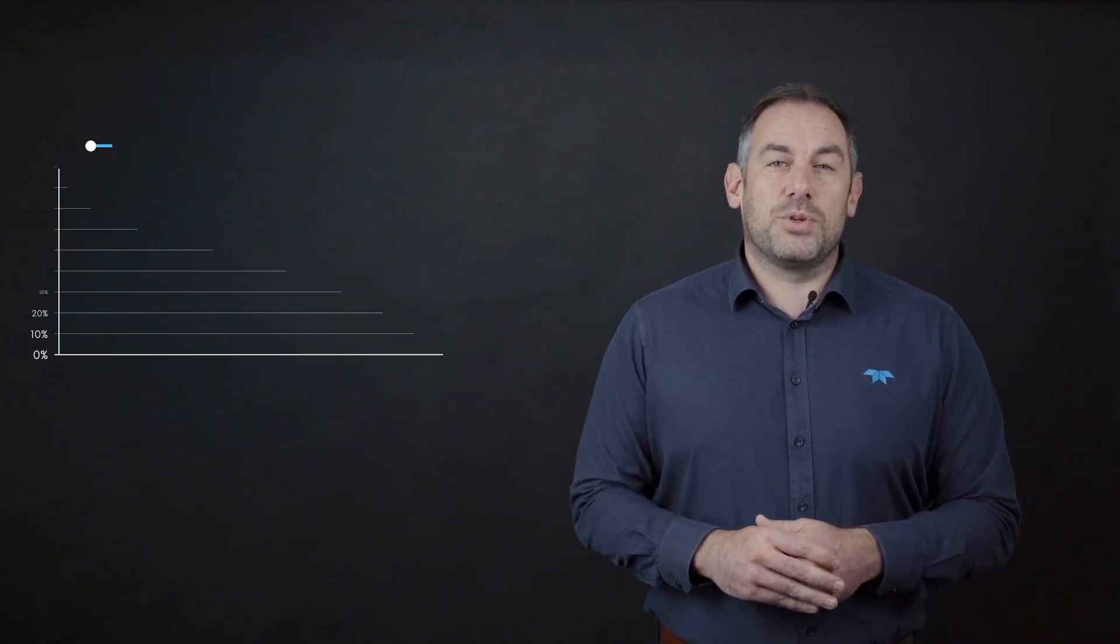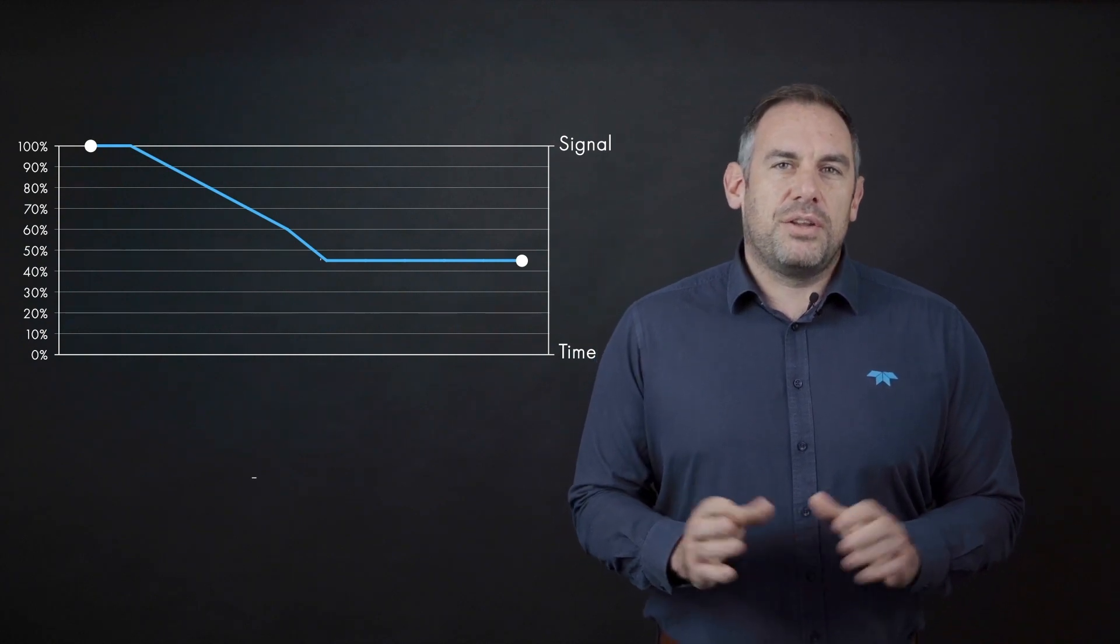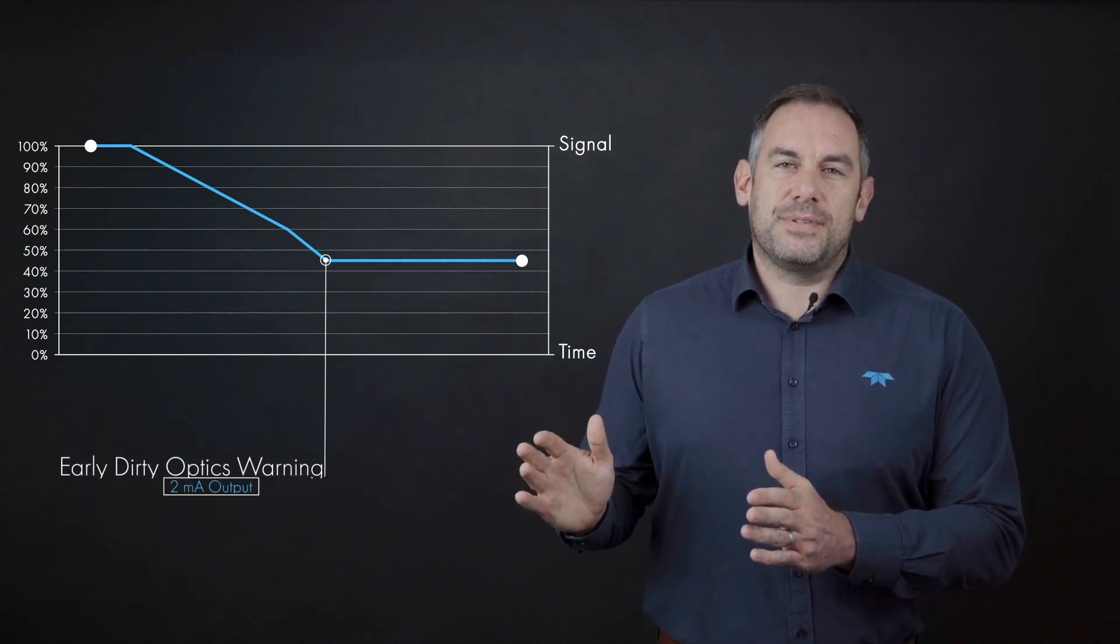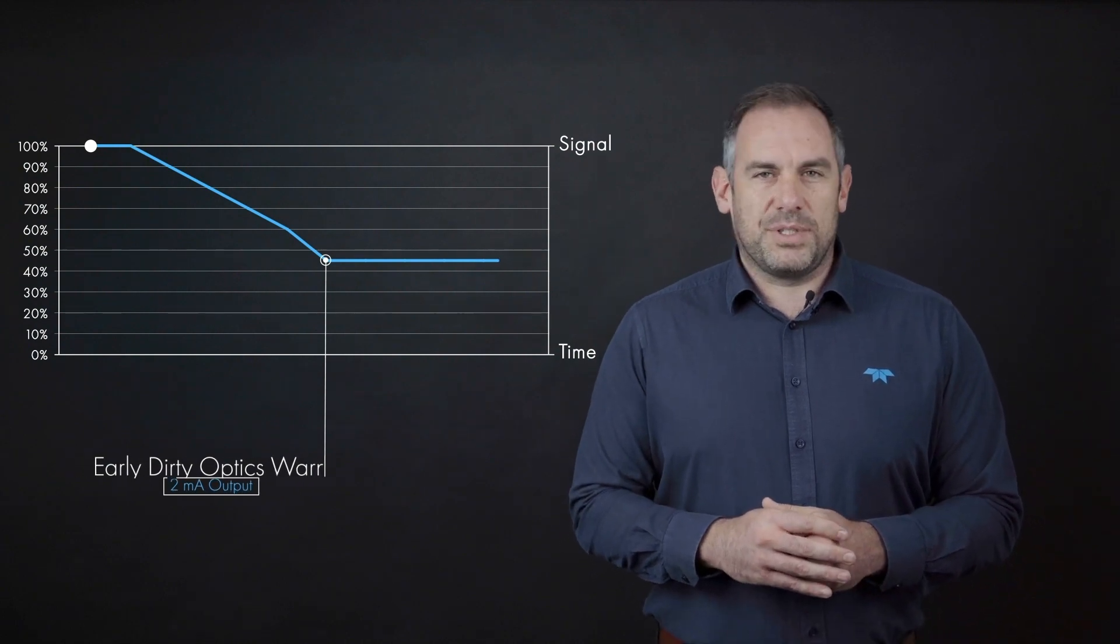When contamination builds to a level where the infrared absorption hits 55% of the calibrated value, the device will output 2 milliamps. This is to indicate that the device is in the early dirty optics warning state.